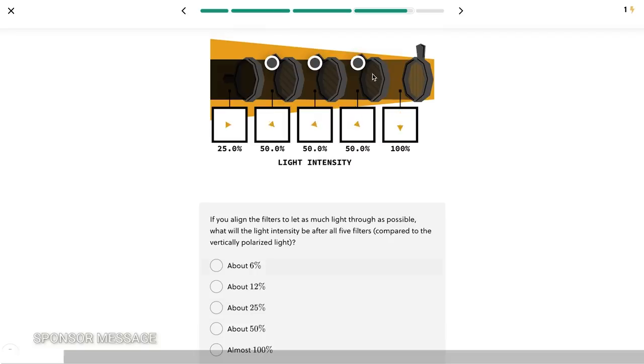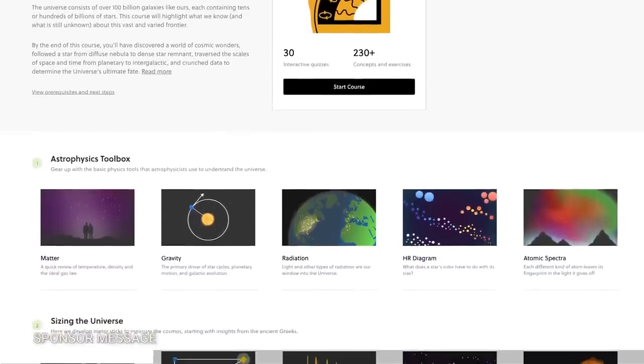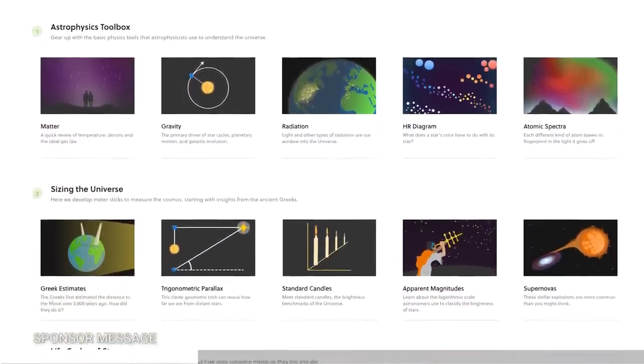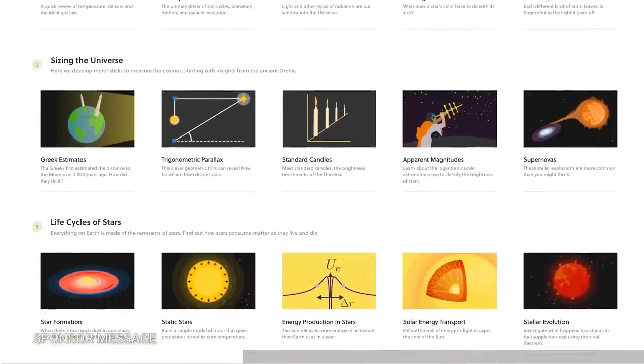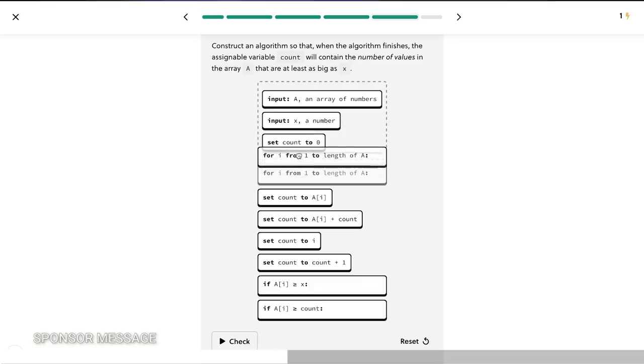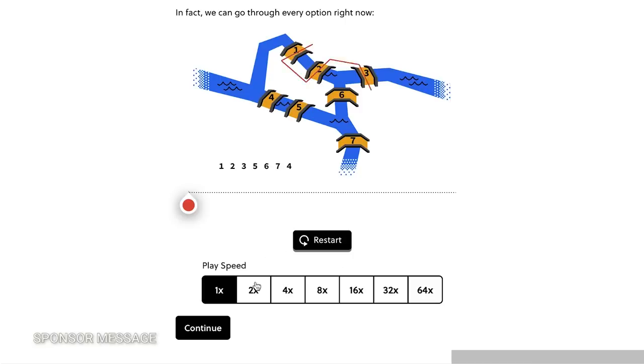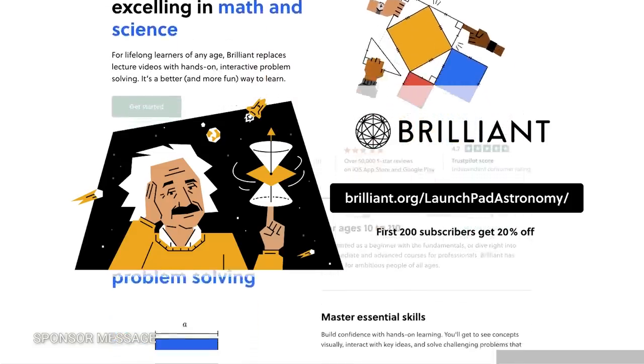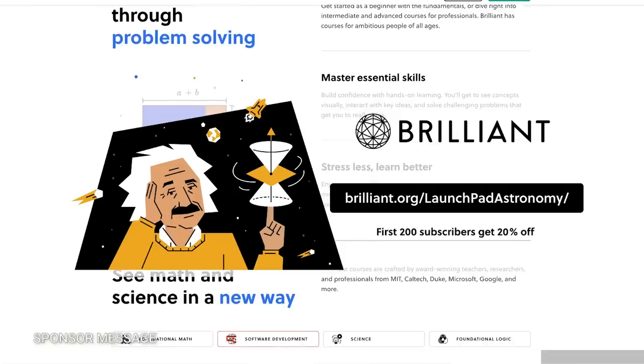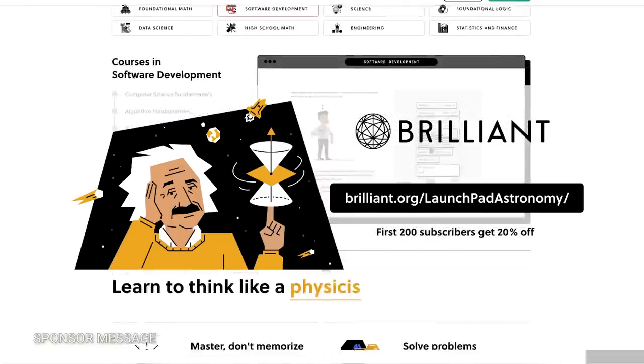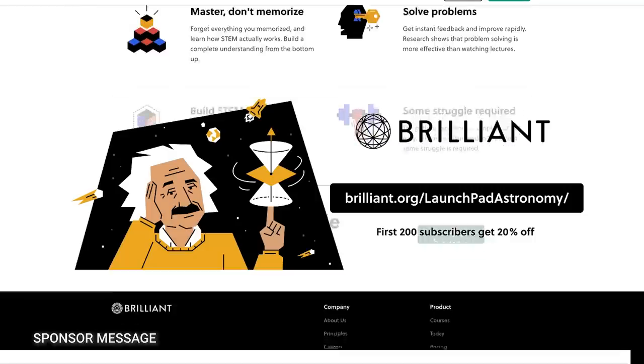I'm so thankful to Brilliant for sponsoring today's video. Brilliant is an amazing tool for learning STEM interactively. There's even an entire course just on astrophysics. You can get your hands dirty with all kinds of physics like the life cycles of stars all the way to the fate of the universe. Interactive learning is a great way to not just play around with ideas, but to just understand them at a deeper level. Best of all, you can use Brilliant whenever you'd like. Whether you're traveling or taking a break at work, there's always something new that you can learn. To get started for free, visit brilliant.org slash launchpad astronomy or click the link in the description. The first 200 visitors to this link will get 20% off Brilliant's annual premium subscription.